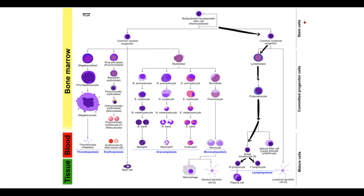In acute lymphoblastic leukemia, a mutation occurs which disrupts normal maturation of lymphoblasts. The first consequence is accumulation of blast cells — when their quantity exceeds 20 percent of all cells in the bone marrow, we call this state acute leukemia. The second consequence is a decrease in formation of mature lymphocytes, which increases the risk of viral infection. These changes in the bone marrow are also reflected in blood analysis.